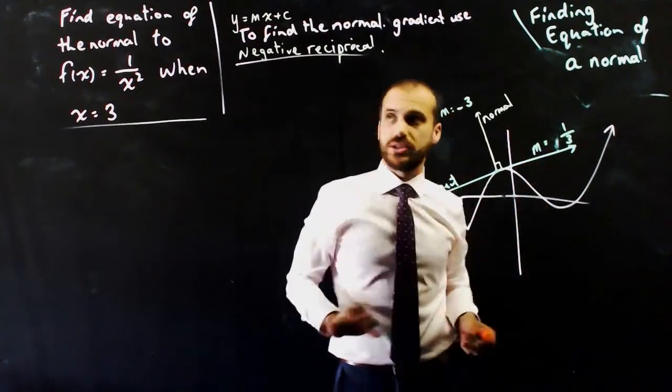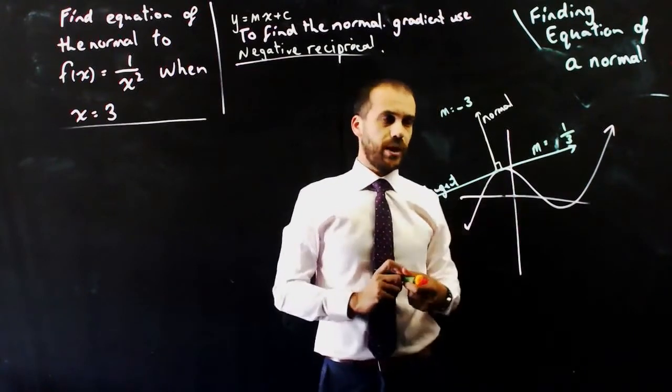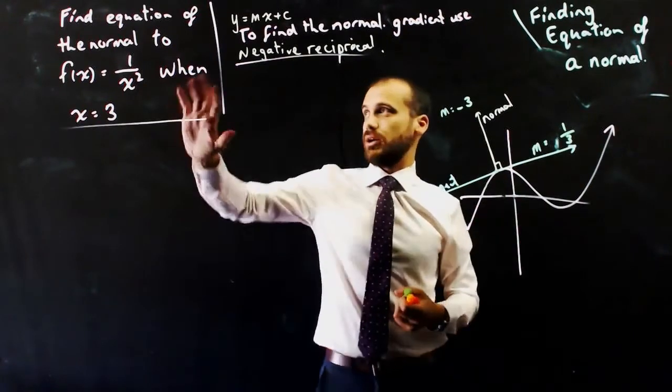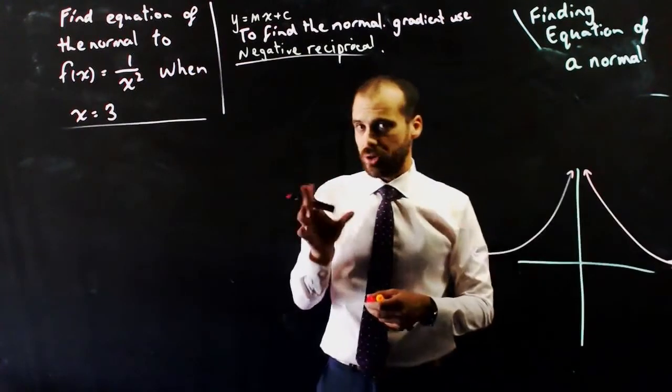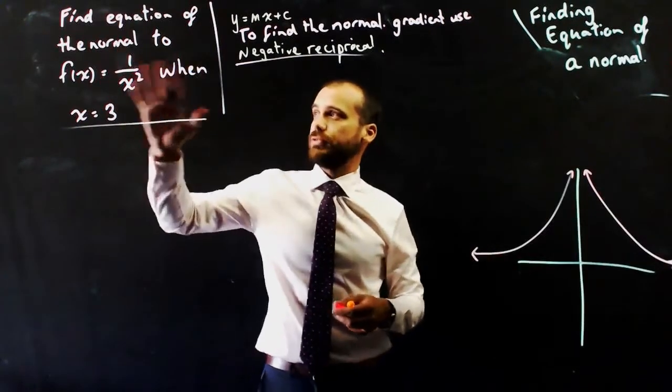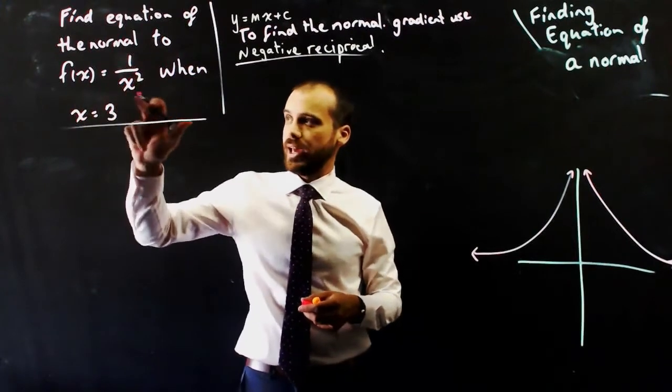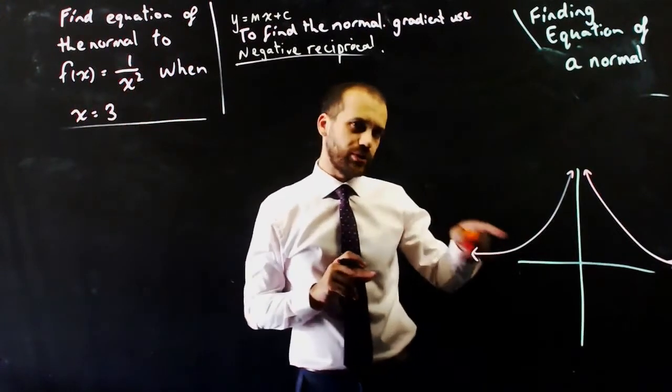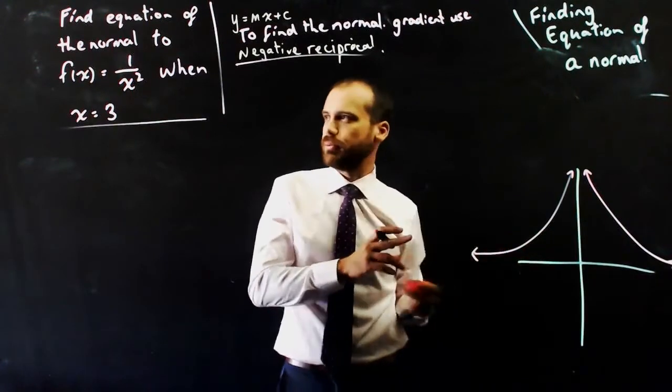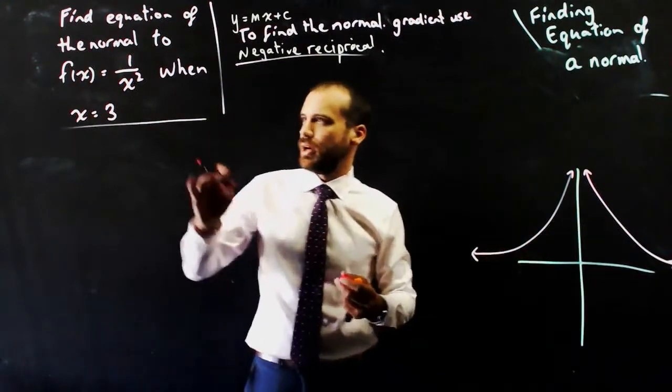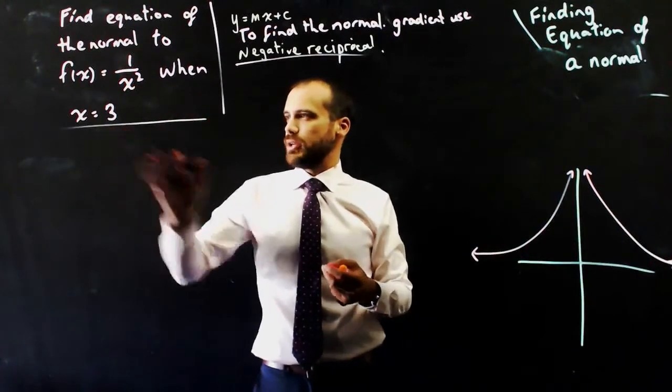Okay, that's what we needed to know about normals and tangents. Now I can just jump into this question here. This says find the equation of normal to f(x) equals one on x squared when x equals three. That's what one on x squared looks like - you won't know that, but it's just useful while I'm making this video.